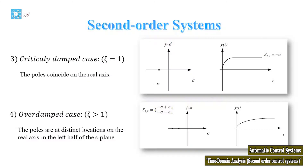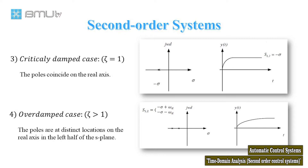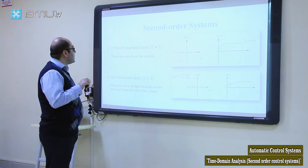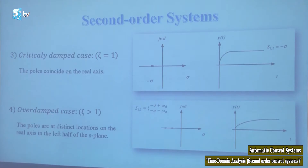Another case is when the poles coincide on the real axis, meaning we have only a real part for the poles of the system. In this case, zeta is equal to 1, the response does not have overshoot, and it is critically damped.